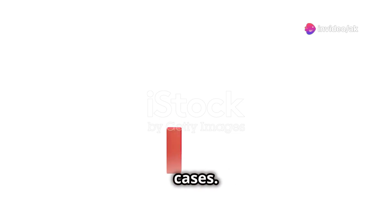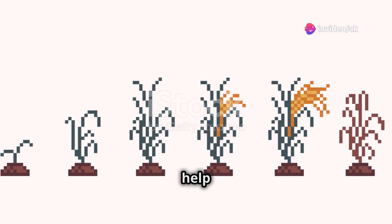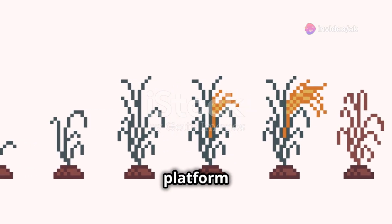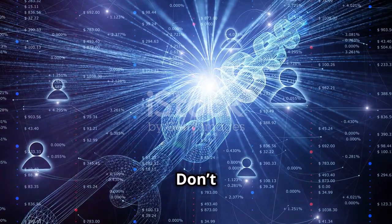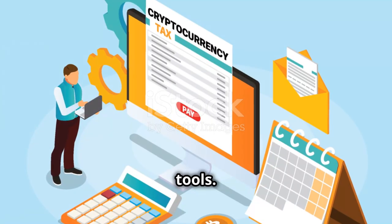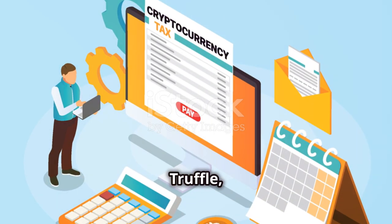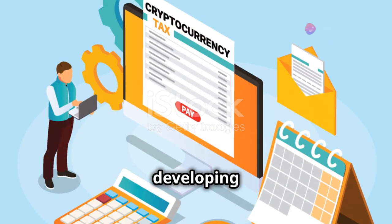Next, you should familiarize yourself with various blockchain platforms. Ethereum, Hyperledger, and Corda are some of the biggest players. Each has its own strengths and use cases, and knowing the differences will help you choose the right platform for your projects.